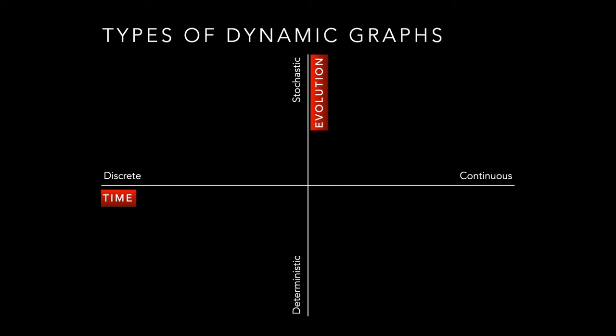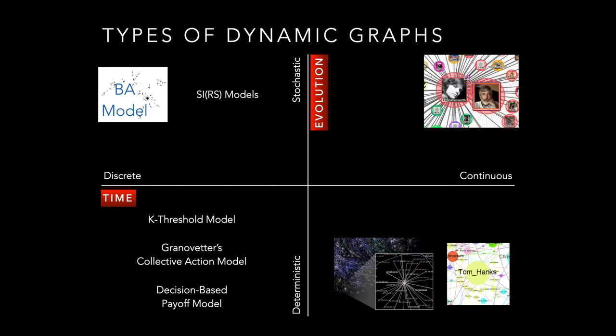The other dimension is evolution: deterministic versus stochastic. Deterministic means we know exactly what will happen in the next time step, and stochastic involves a degree of randomness. The BA model is discrete and stochastic — there's a discrete time point where a new node is added, but it's stochastic in that we don't know exactly which nodes the new node gets attached to, even though higher-degree nodes are more likely.